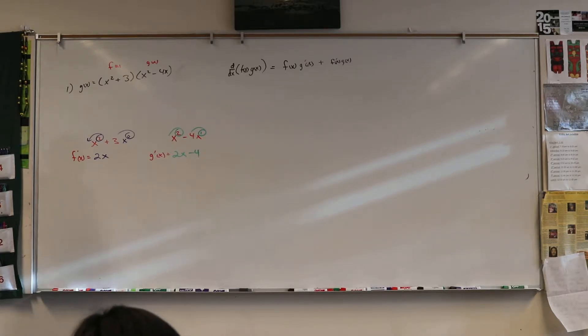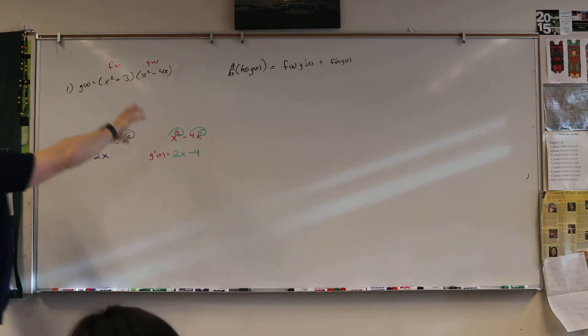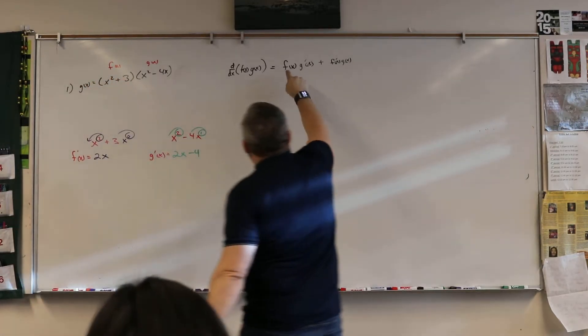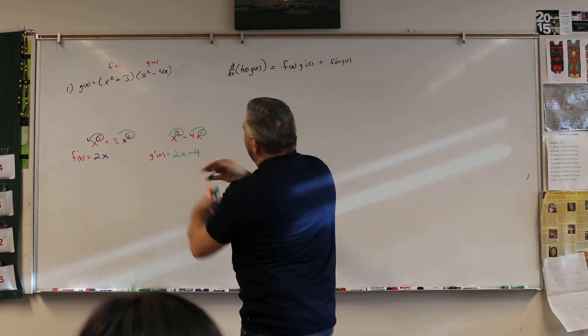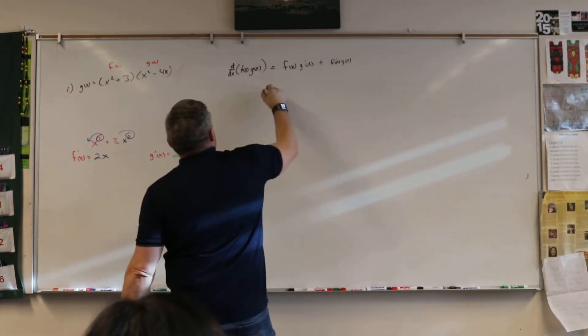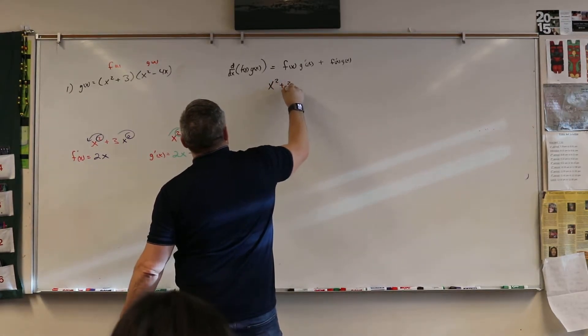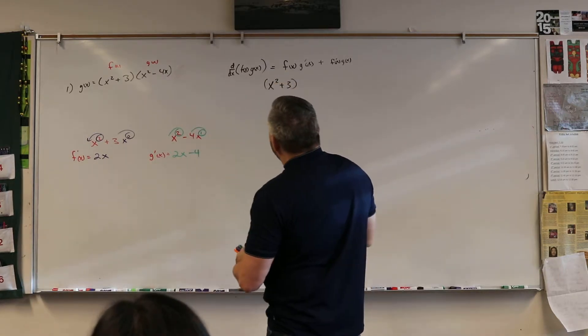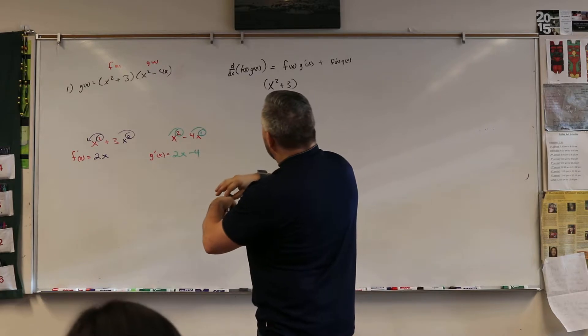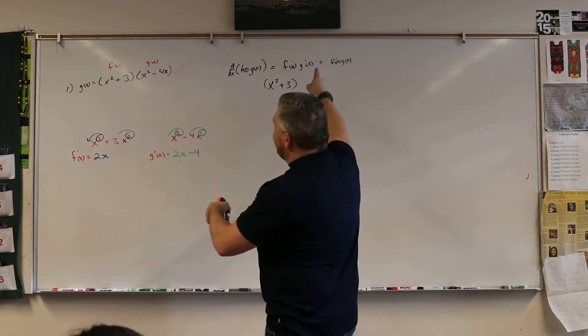So now we can set up the formula. And the formula says over here, we're going to take f of x, the regular f of x. So we're going to take that normal x squared plus 3. And we're going to multiply it by what? G prime of x.